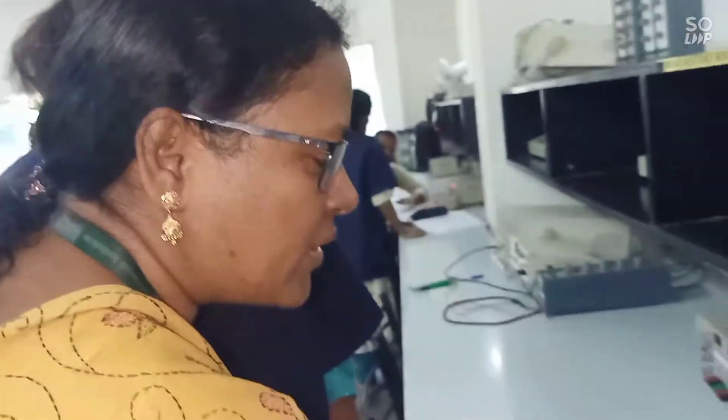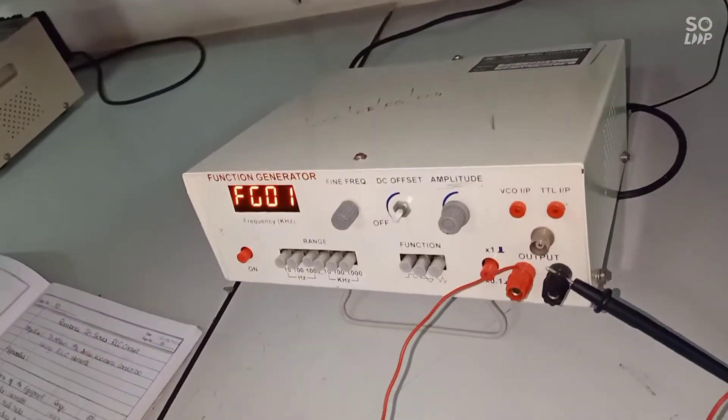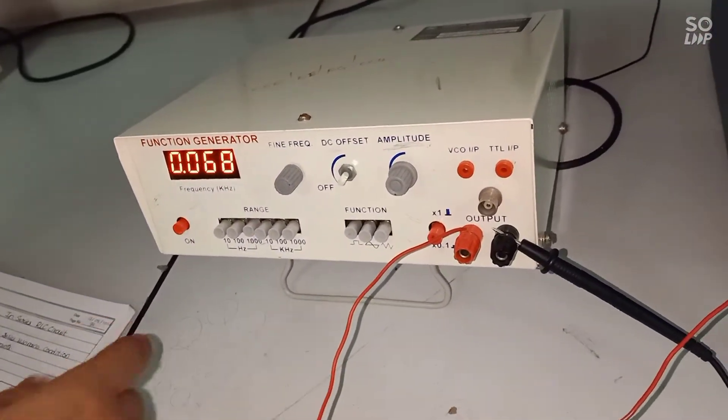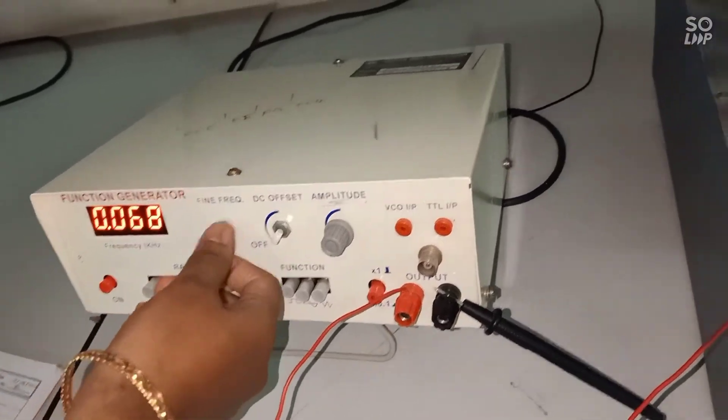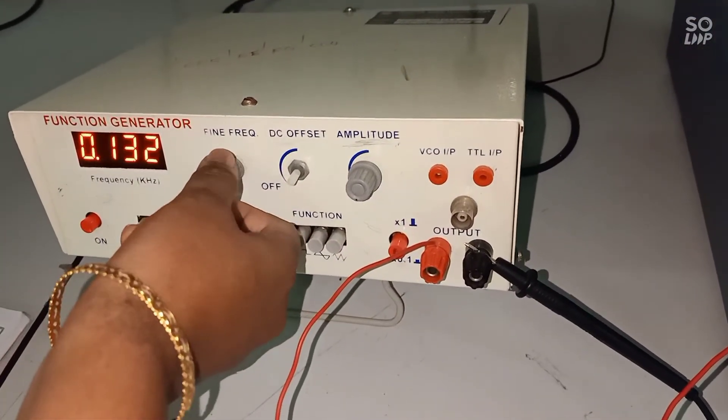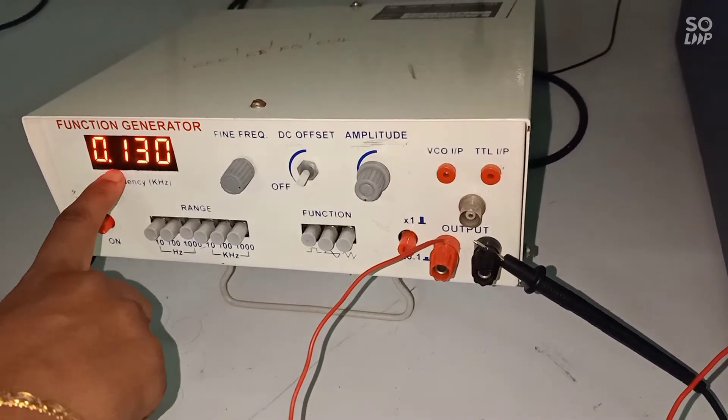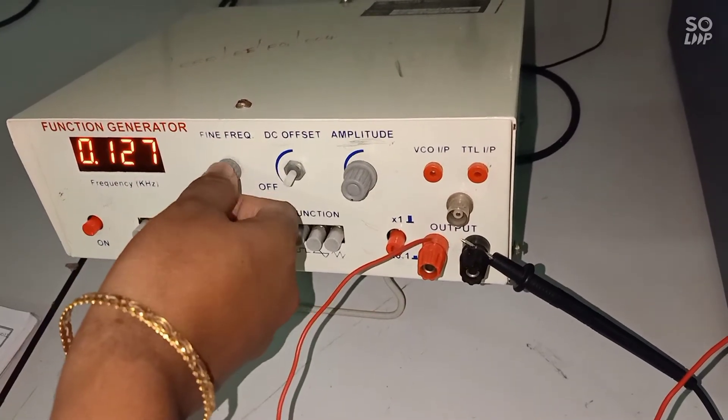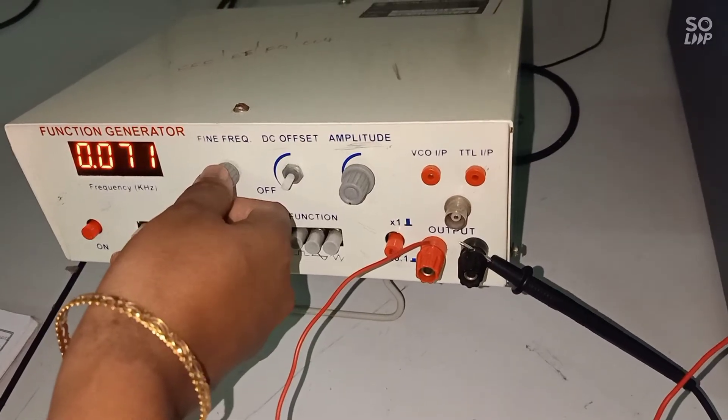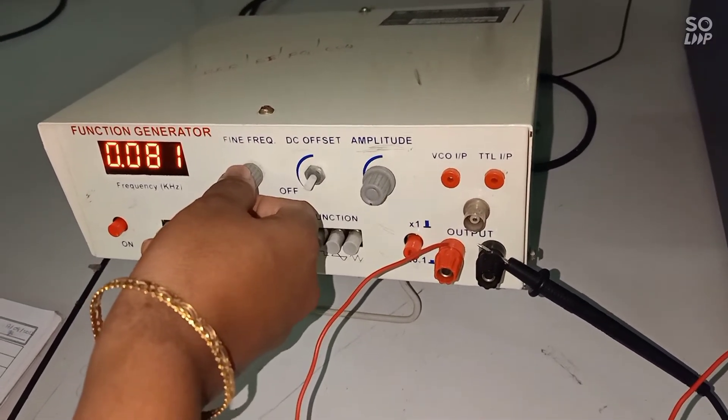Then switch on the supply of the function generator. By varying this fine frequency knob, apply frequency. Initially we apply a frequency of 100 hertz. Here it is in kilohertz so it will be 0.10. Exactly it will not be, but approximately you will be getting 0.105 like that.